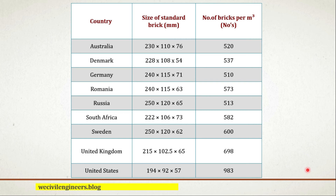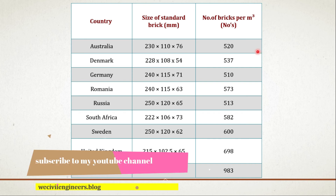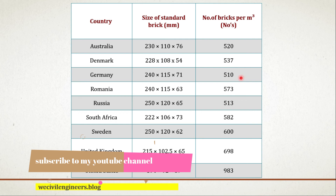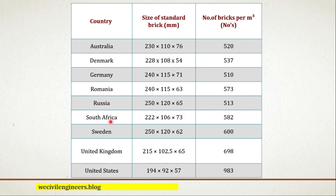For Australia, we need 520 bricks per cubic meter. For Denmark, 537. For Germany, 510. For Romania, 573. For Russia, 513. For South Africa, 582. For Sweden, 600. For the UK, 698. For the United States, 983 bricks per cubic meter.